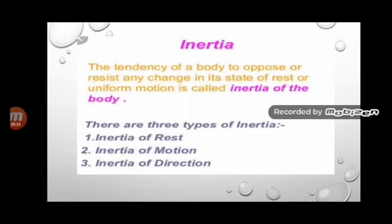The tendency of a body to oppose or resist any change in its state of rest or uniform motion is called inertia of the body. There are three types of inertia: inertia of rest, inertia of motion, and inertia of direction. The first one is inertia of rest.